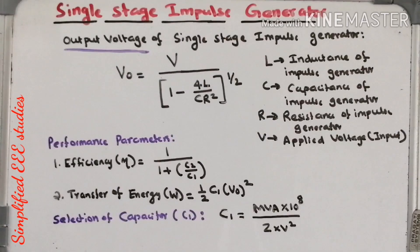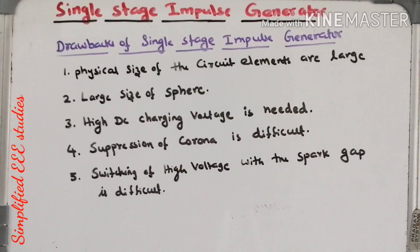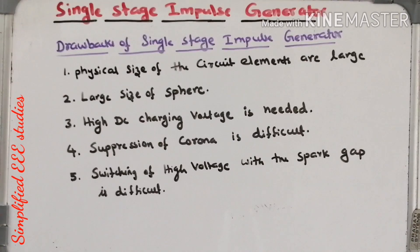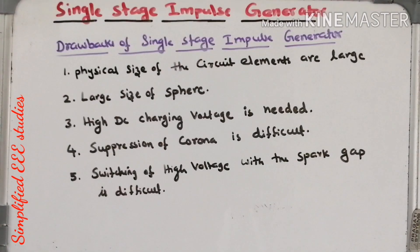These are the important details regarding single stage impulse generator. We covered the working, constructional details, equivalent circuit, and design procedure. Now let us conclude with the drawbacks. The first drawback is that the physical size of circuit elements is too high because capacitor and inductor values must be selected at very high values, making physical size too large.